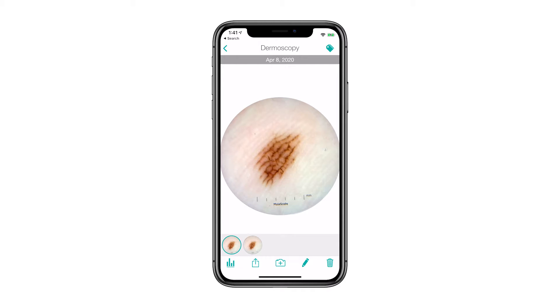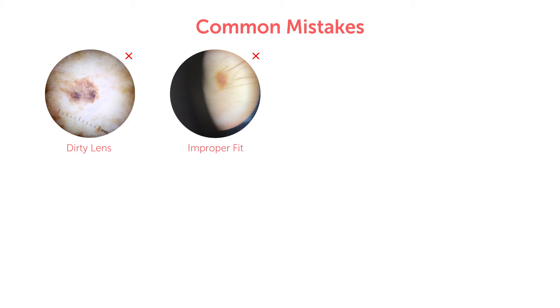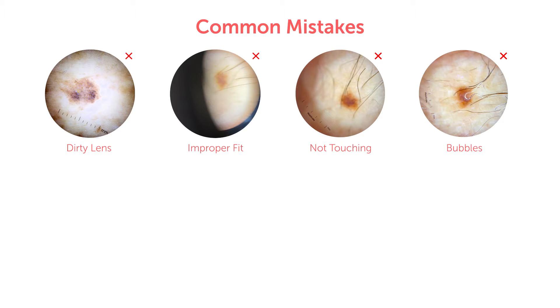Please do not send a blurry image because it will increase wait times and be unusable by the clinical team. There are a few common mistakes to avoid when taking dermoscopic images. The phone camera lens or Molescope lens may be dirty, resulting in a blurry image. The Molescope may be fitted improperly to the phone so the lenses don't line up. The Molescope contact cap may not be contacting the skin, or alternatively it is pressed too hard. Simply rest the contact cap on the skin and ensure it fully touches the lesion. If you're using fluids such as gels or rubbing alcohol, make sure that there are no bubbles over the lesion.